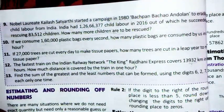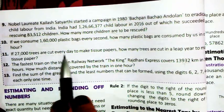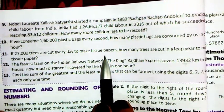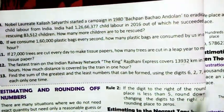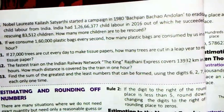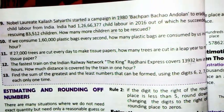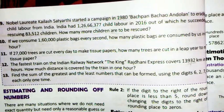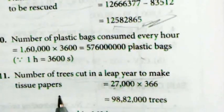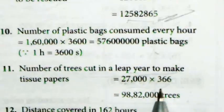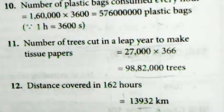Next: if 27,000 trees are cut every day to make tissue paper, how many trees are cut in a leap year? A leap year has 366 days. So number of trees cut in a leap year = 27,000 × 366, which gives us the total.